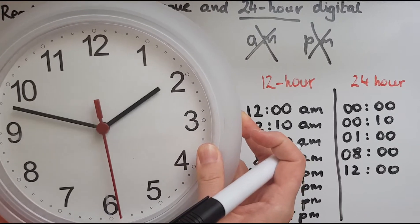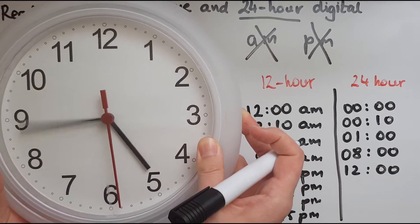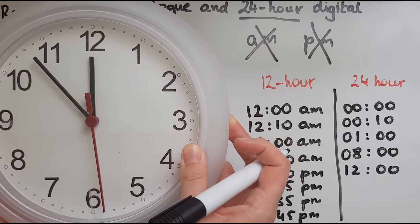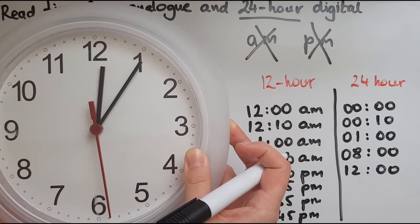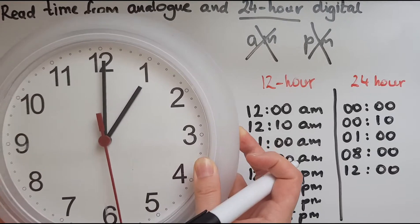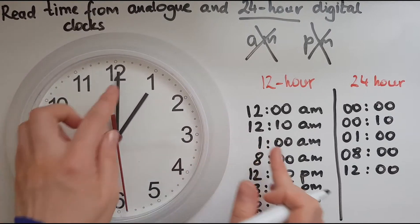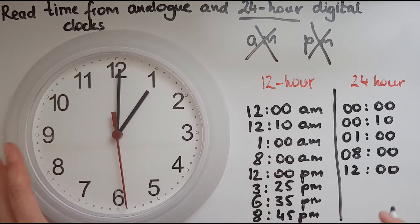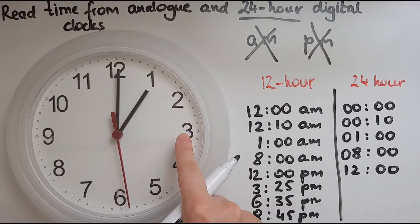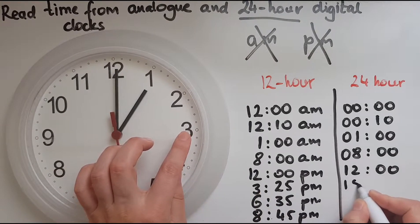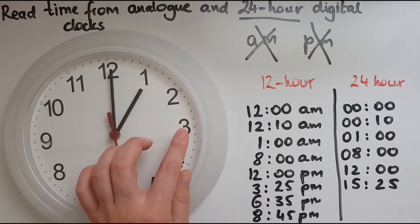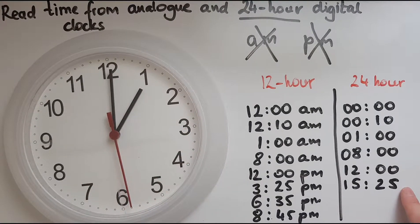And then 3:25 p.m. Right, at 12 p.m., this is what happens. After we've gone through all this and it's 12 p.m. midday, we continue. So 1 p.m., 2 p.m., 3 p.m., and so on. It's 13 now, so one hour past 12 is actually 13. So then would be 14, 15. So that is 3:15:25.